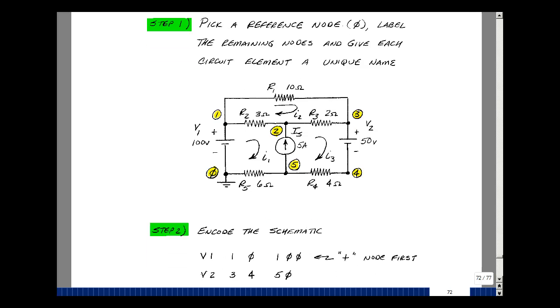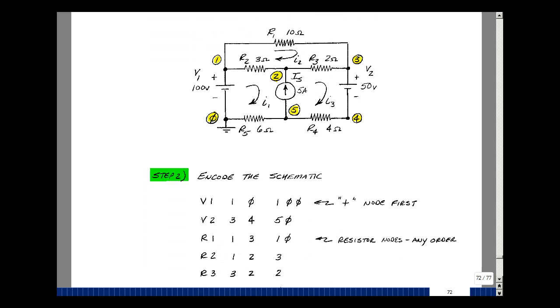Step two is to encode the schematic. Both of the sources begin with the letter V, and the first node that we're going to give SPICE is the plus node. Here's V1 with the plus node at 1 and the minus node at 0. So the encoding would be V1, and you can have up to seven characters, then a space, 1, space, 0. Then you give the value, in this case 100 volts. My voltage source V2 is between nodes 3 and 4, with a value of 50.